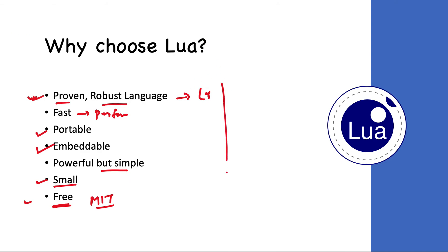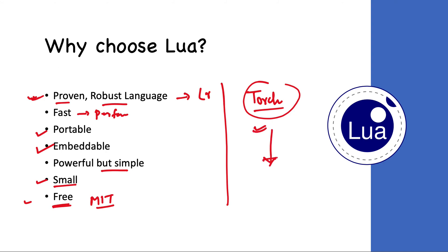For those interested in machine learning, a very popular machine learning framework called Torch was written entirely in Lua. It was so popular that a Python version was also created, called PyTorch. So you can see that Lua has proven to be a very robust language — it is small, fast, portable, and very powerful yet simple. That is why you should choose Lua as a programming language.